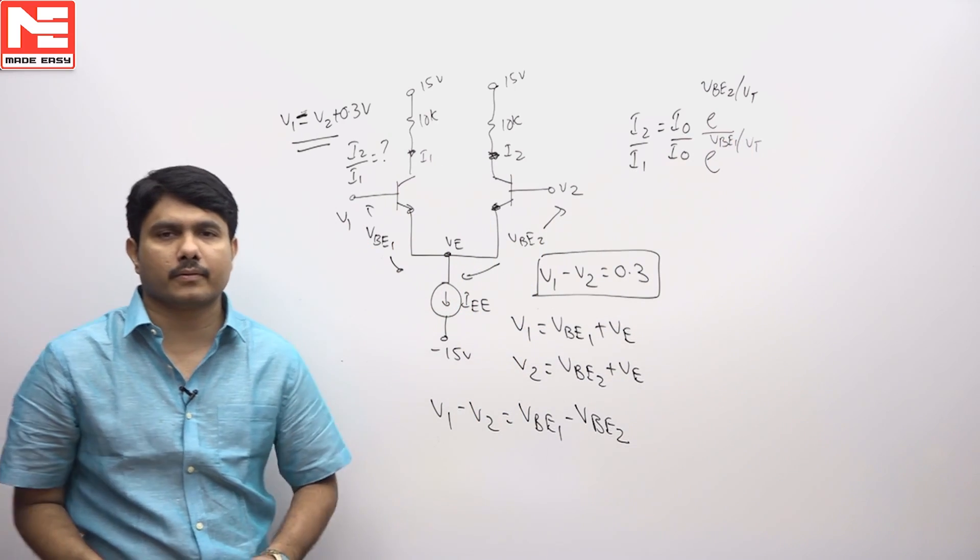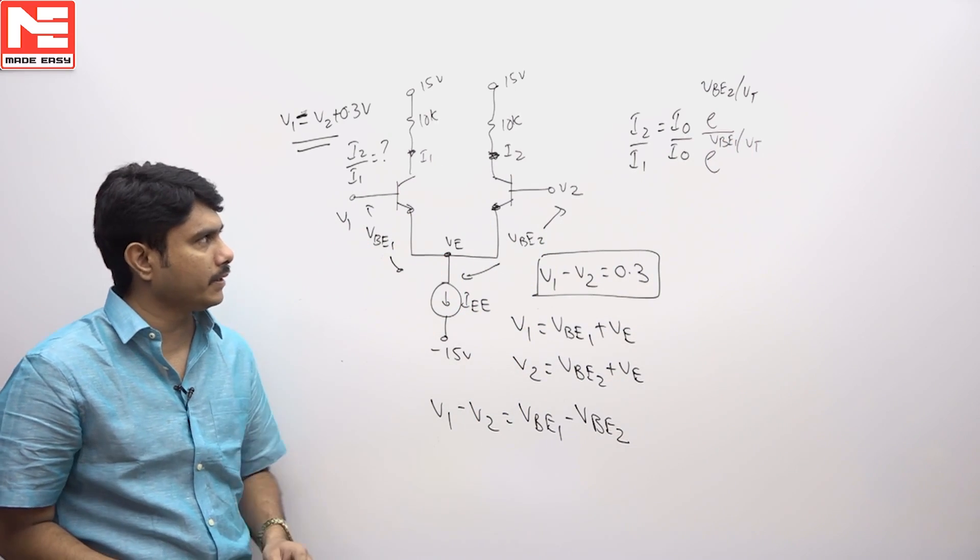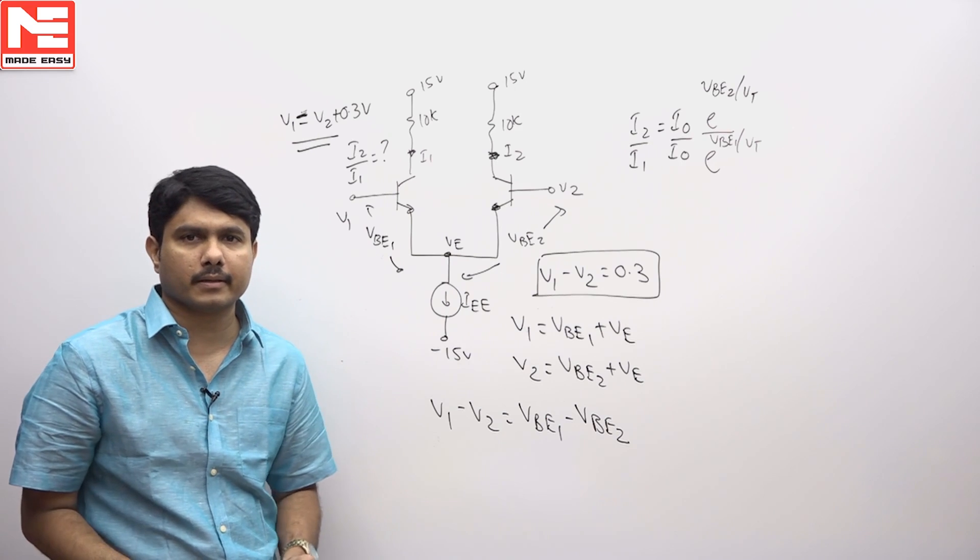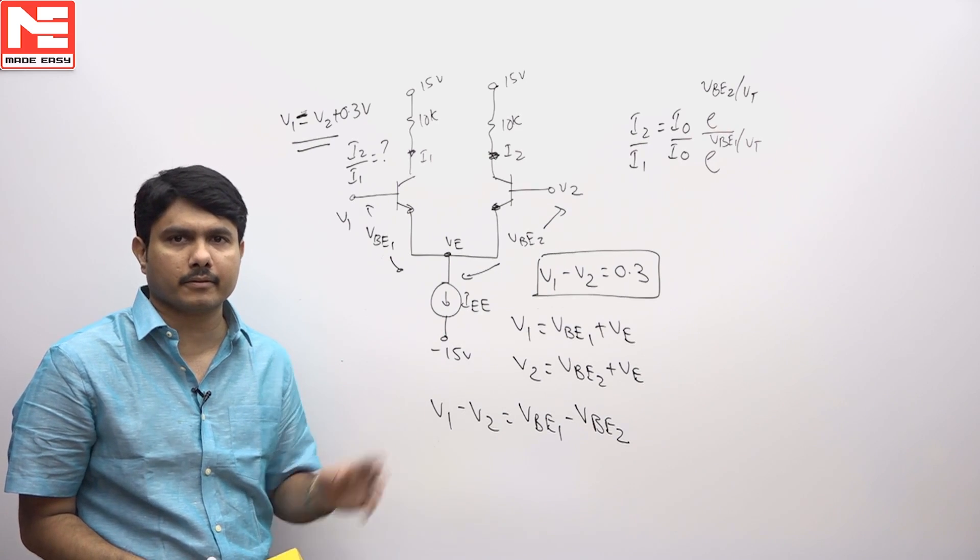So currents are different, so voltages are different but I0 and VT will be same because they are not related to batteries, they are related to temperatures.